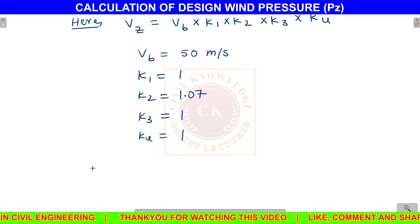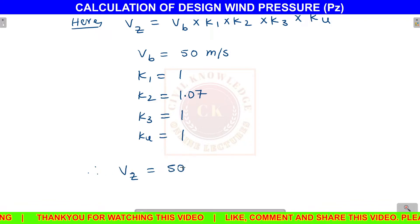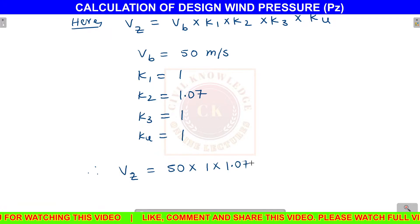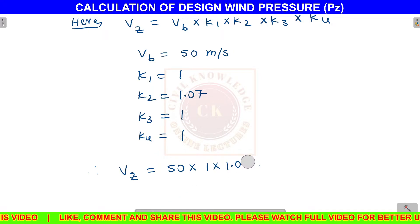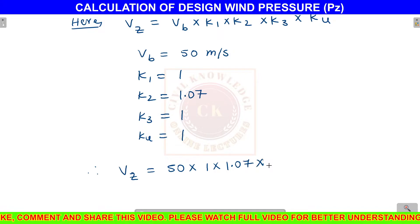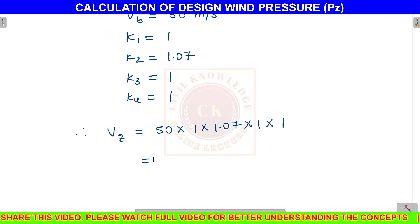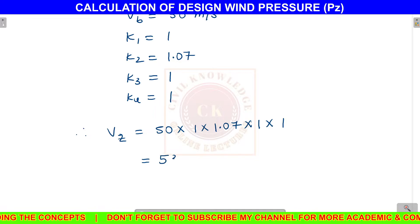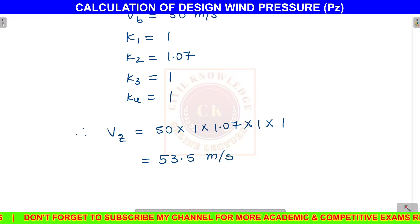Therefore, Vz equals VB into K1 into K2 into K3 into K4, which is 50 into 1 into 1.07 into 1 into 1. Calculating this, the final design wind speed Vz is 53.5 meters per second.